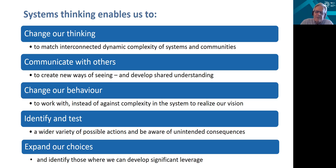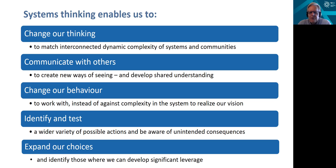Systems thinking allows us to identify ahead of time and imagine the consequences of things we do in the system. It gives us more possible actions and helps us think through the unintended consequences of what might happen when we intervene. There are lots of ways to intervene in the system — they're not all good, but they all have massive system-wide effects. We want to expand our choices and identify the ones with maximum leverage. You can push hard and harder on systems and not get anywhere. But if you find the right tipping point, the right leverage points, sometimes a light intervention can have a very large effect — and we have to learn how to find those leverage points.